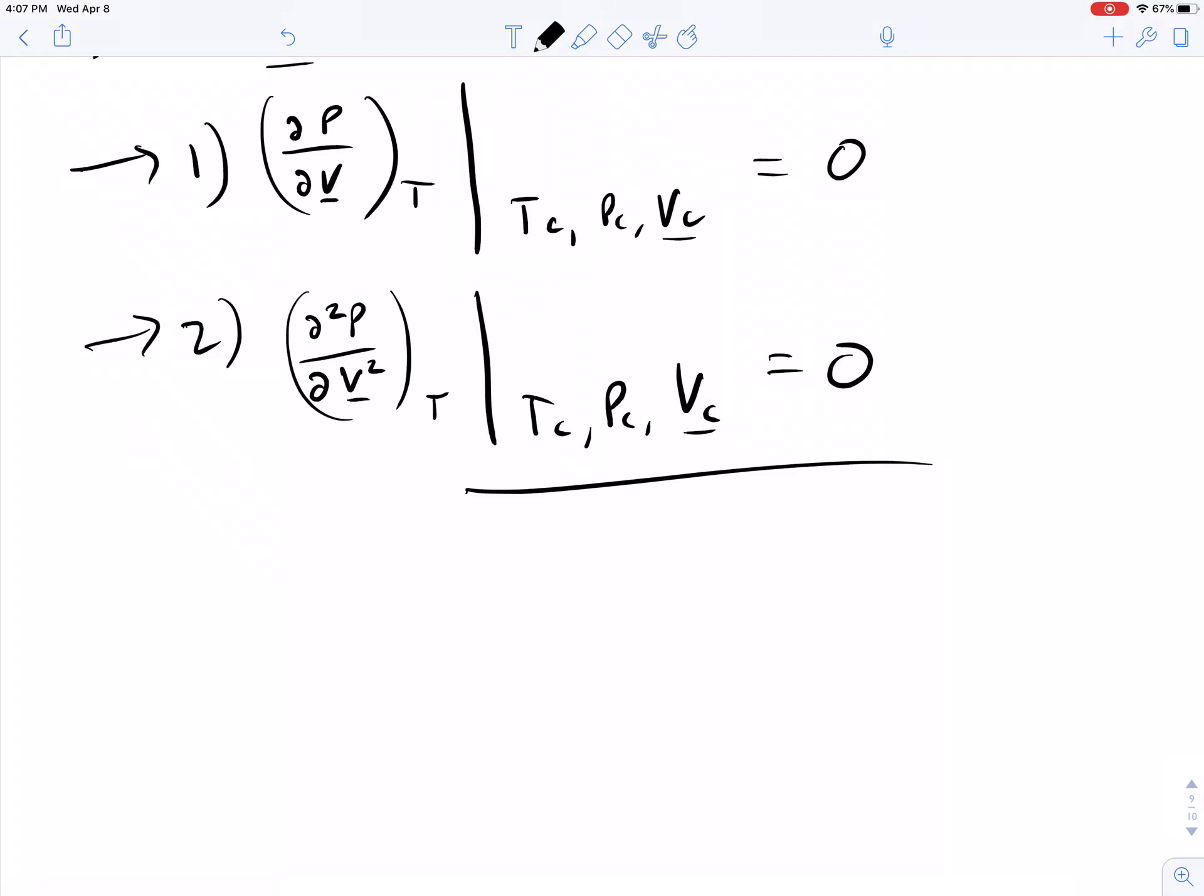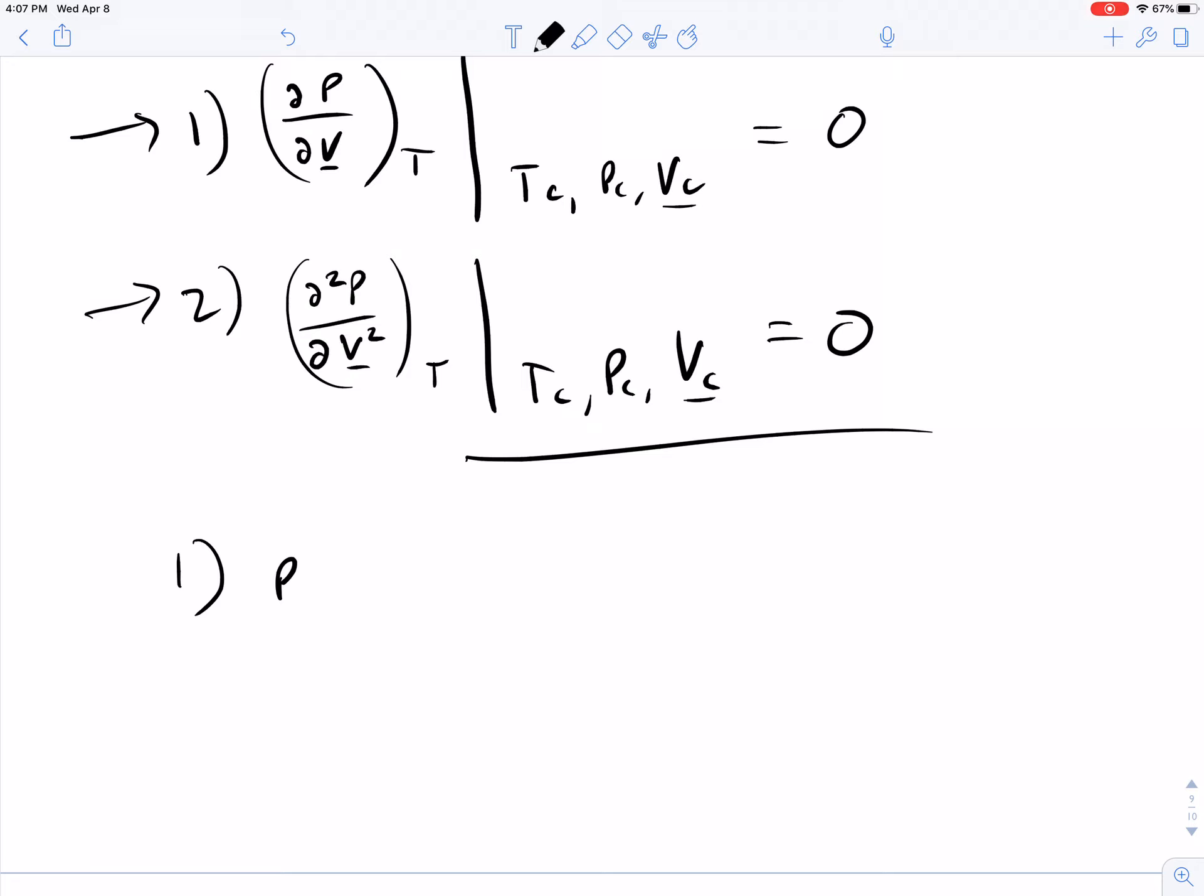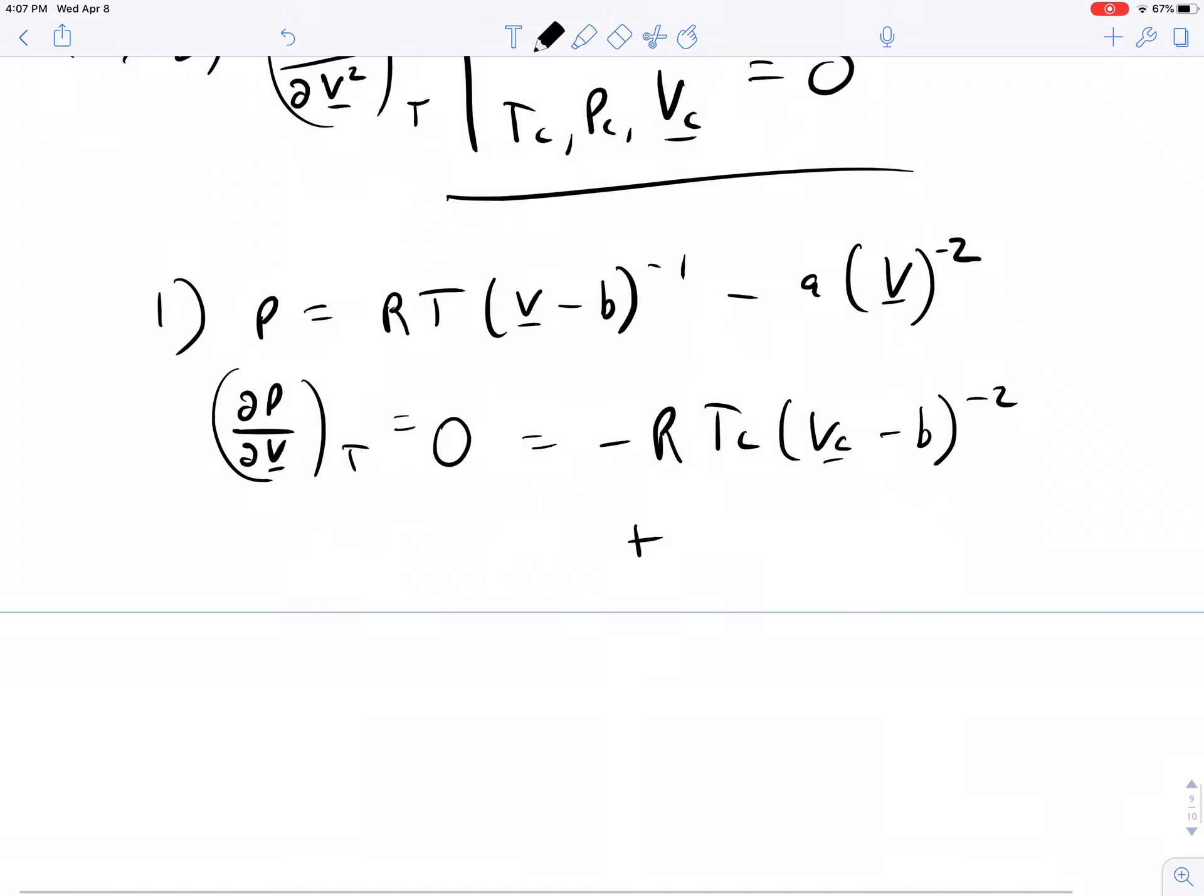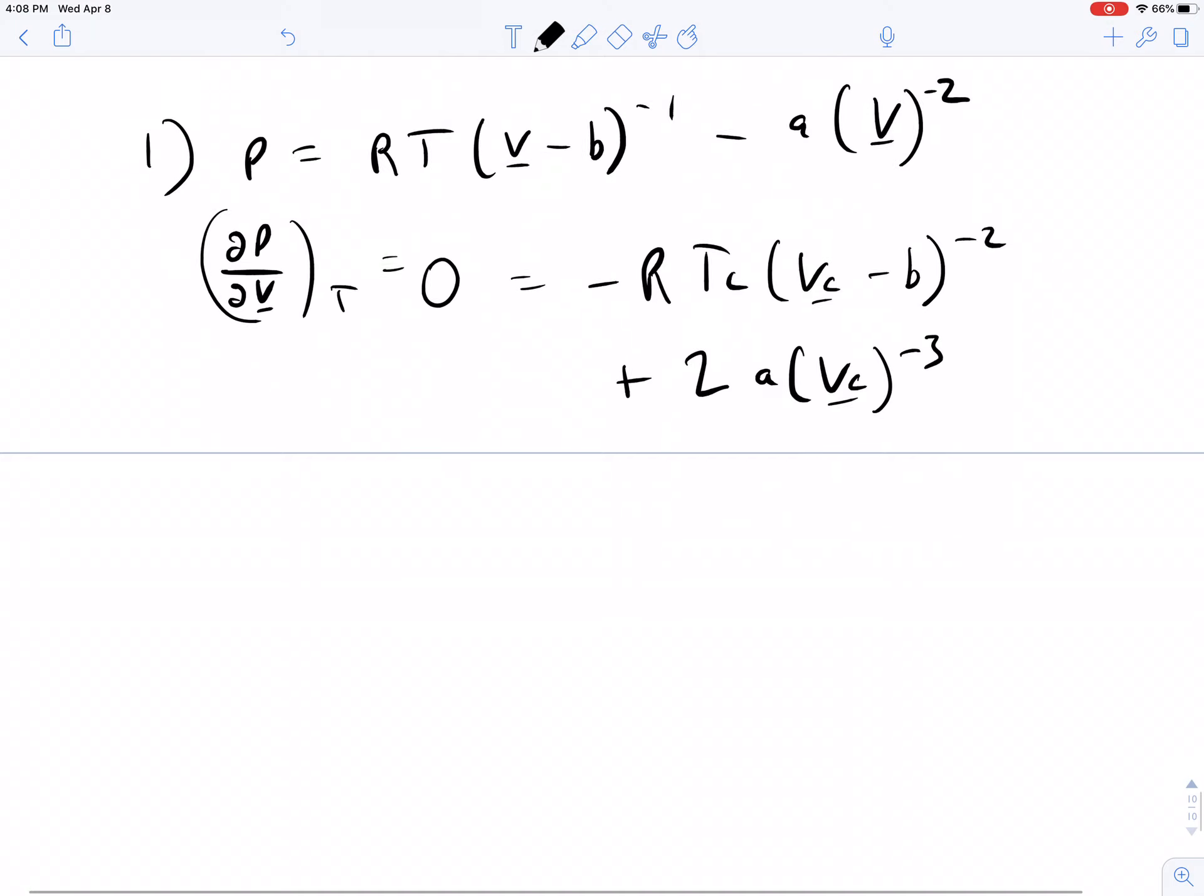Let's do the first one. I like to rewrite this Van der Waals equation of state in a slightly different way, just for the calculations. P equals RT times V minus B to the minus 1 minus A times V to the minus 2. So then we have del P del V at constant T equals zero, which equals the derivative of these. Minus R times TC times VC minus B all to the minus 2 plus 2 times A times VC to the minus 3. So we have this equation now that we can use to simplify.